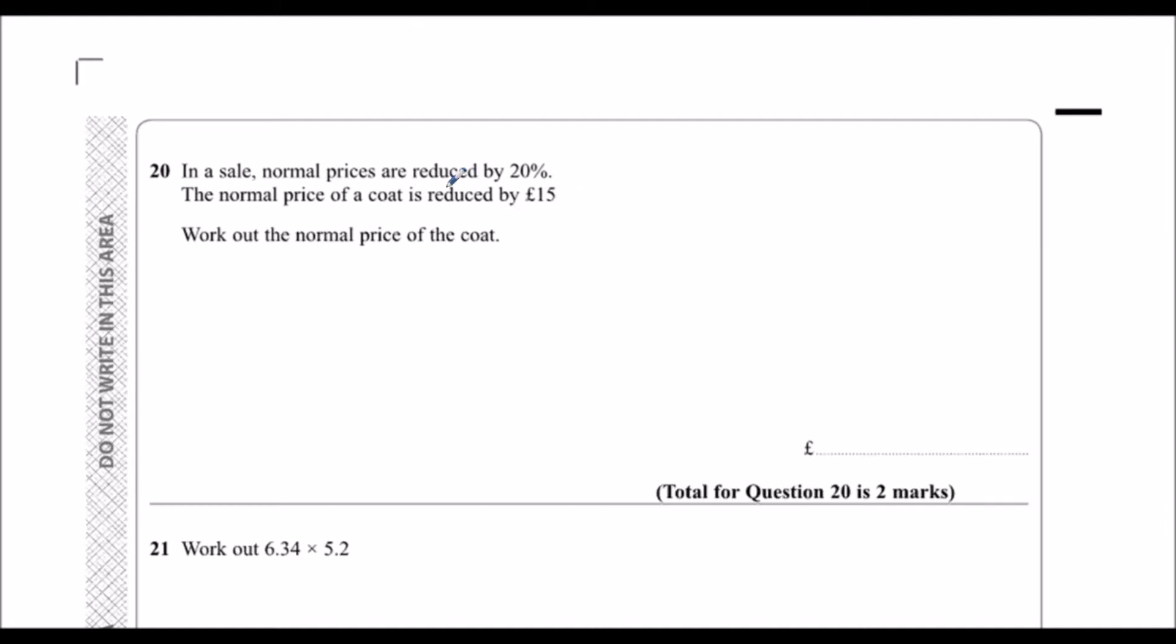Okay, so the reduction is £15 and the reduction is 20%. So they're saying £15 is equal to 20%. How can I find that the normal price is 100%?